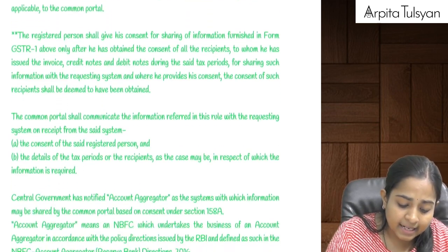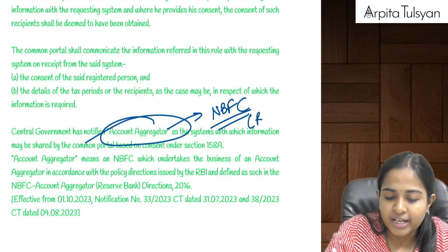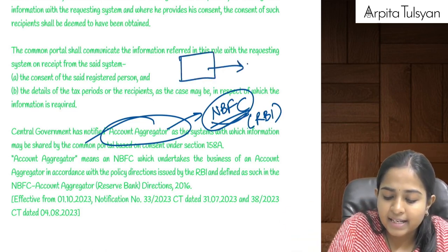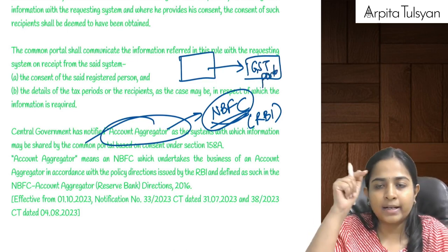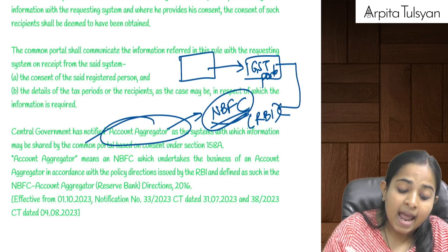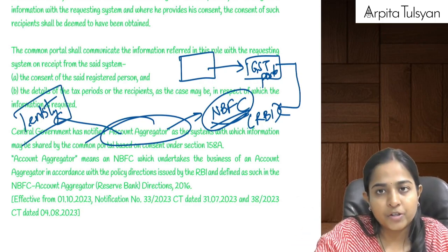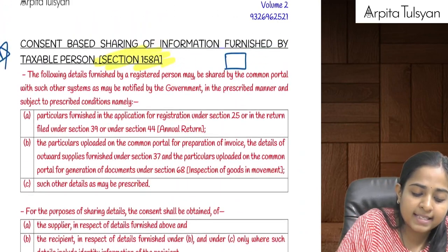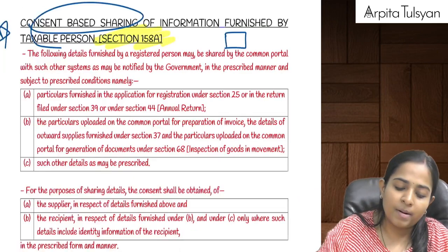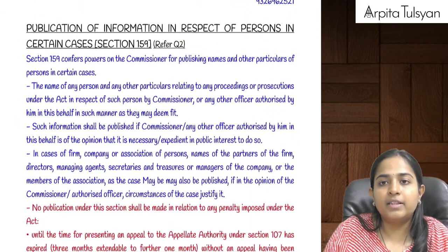As per Rule 163, the GST portal shares this information with an Account Aggregator, which is an NBFC functioning as per RBI guidelines and provides the service of sharing information between two entities. So the GST portal shares your data with the Account Aggregator, which then shares it with the other entity. This is called consent-based sharing — the GST common portal cannot suo motu share your information without your consent.